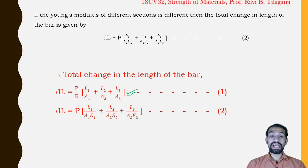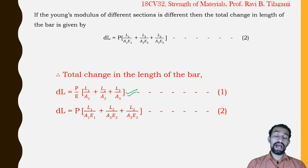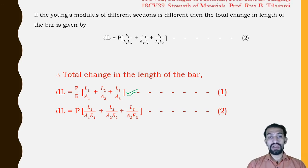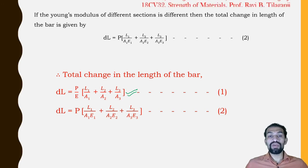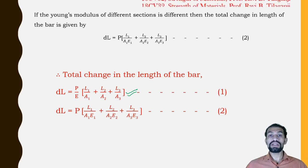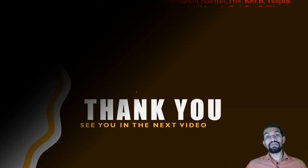To summarize: when Young's modulus is the same — dL = (P/E)(L1/A1 + L2/A2 + L3/A3). When Young's modulus differs — dL = P(L1/A1E1 + L2/A2E2 + L3/A3E3). A third case with separate loads can be similarly formulated. This was the analysis of bars with varying sections under common load. Thank you, and see you in the next video.